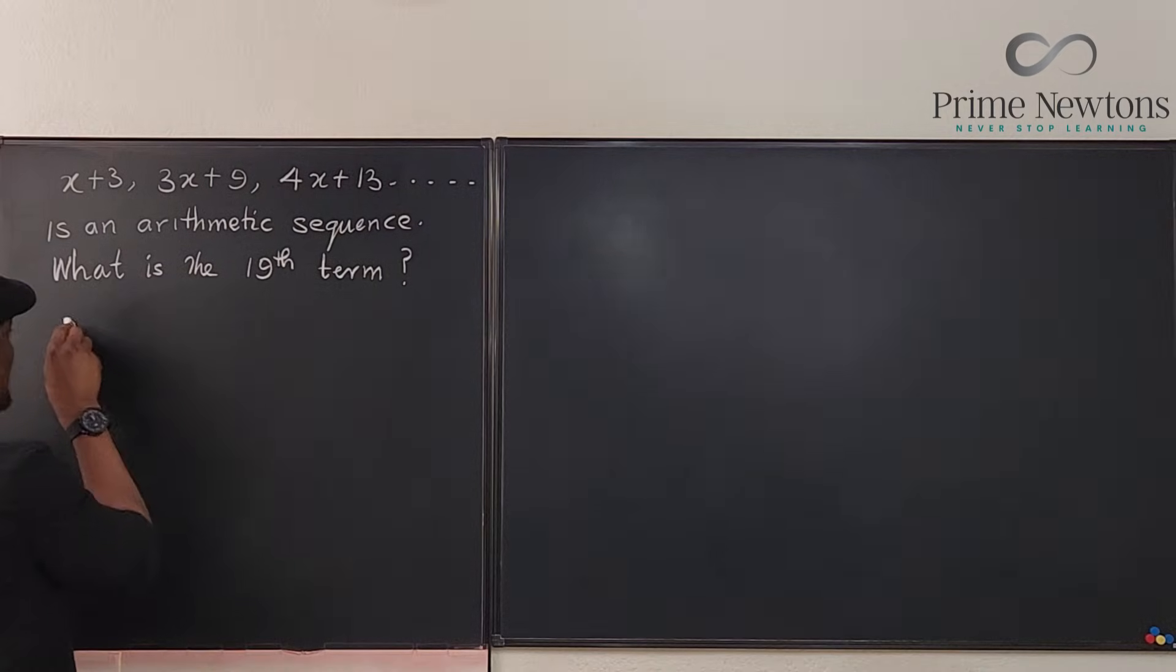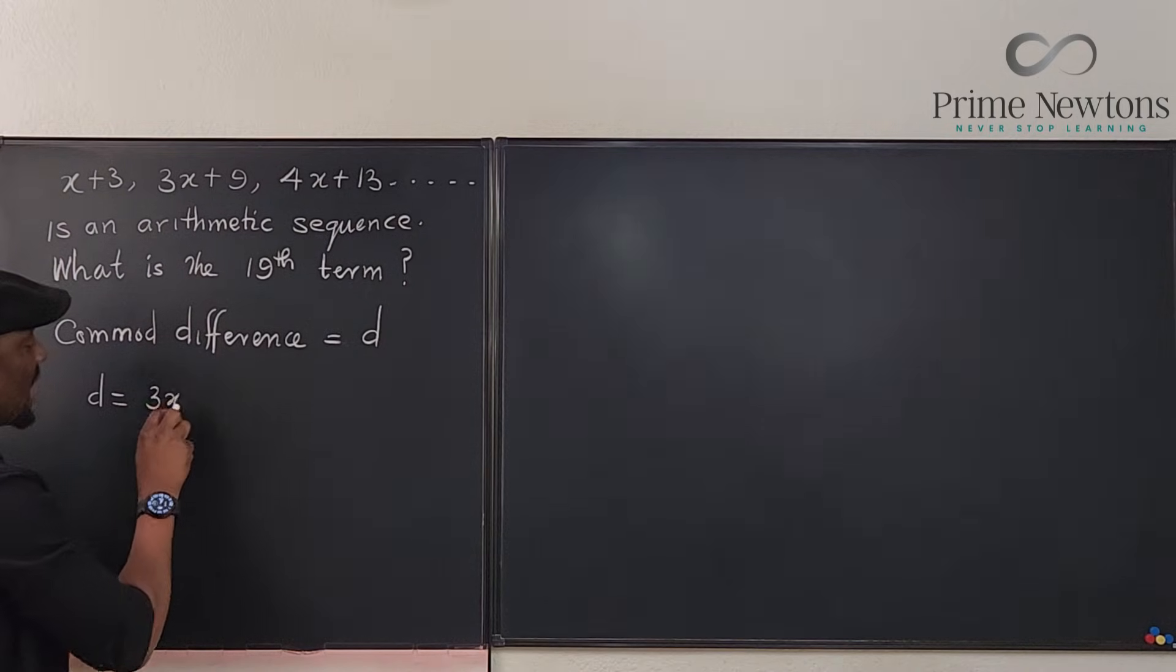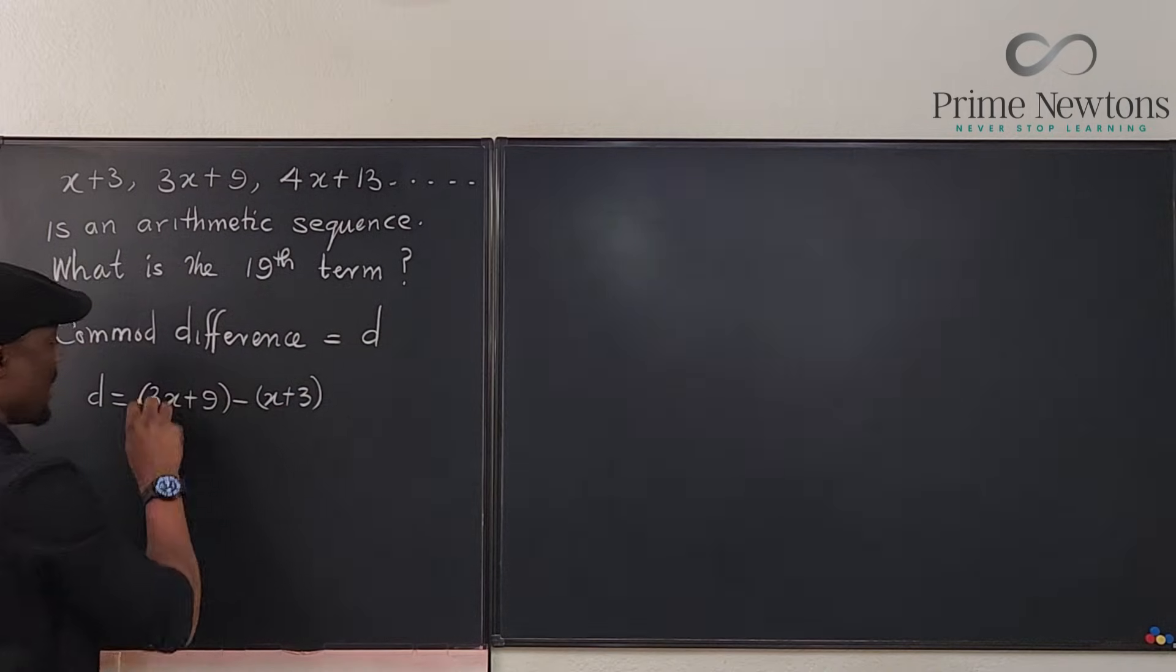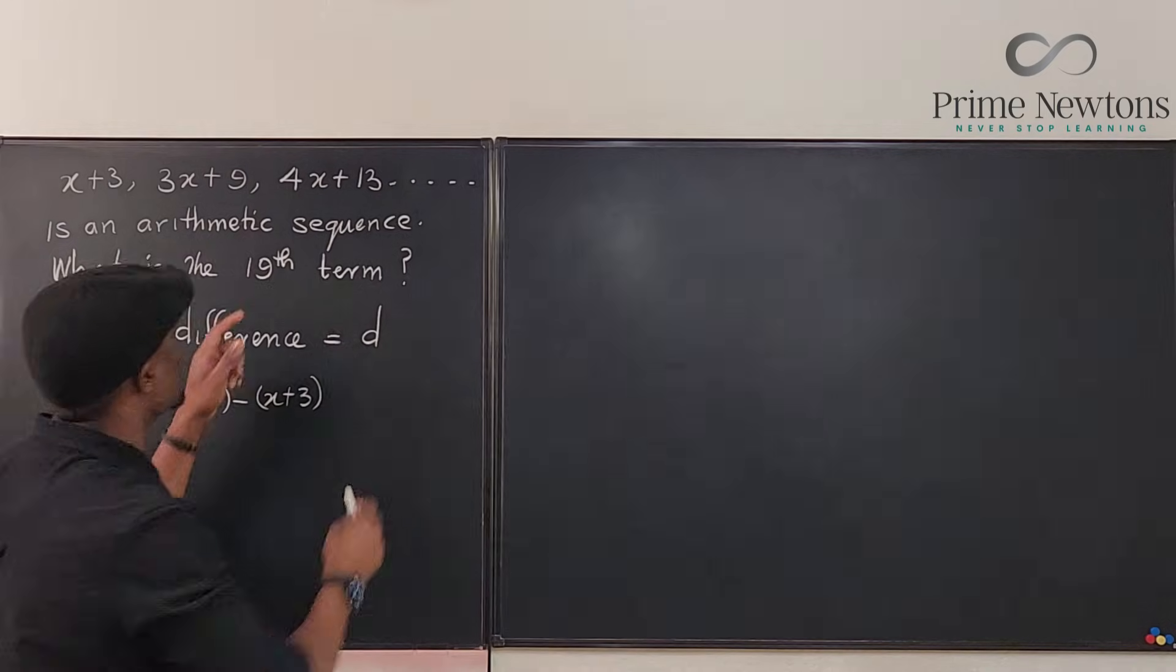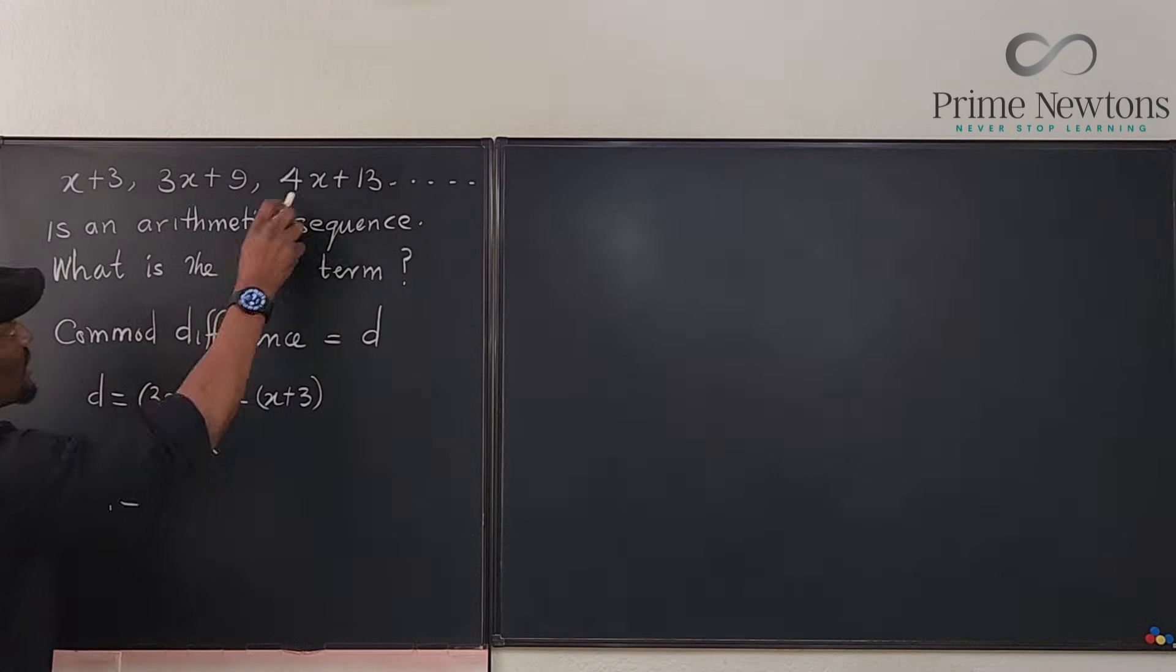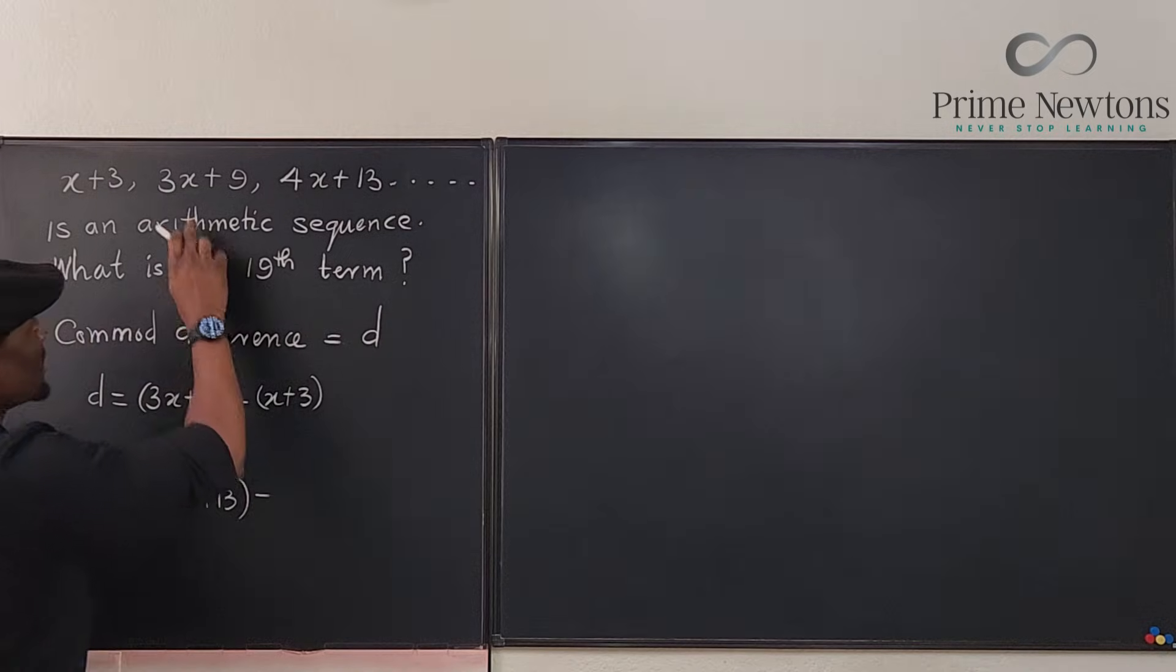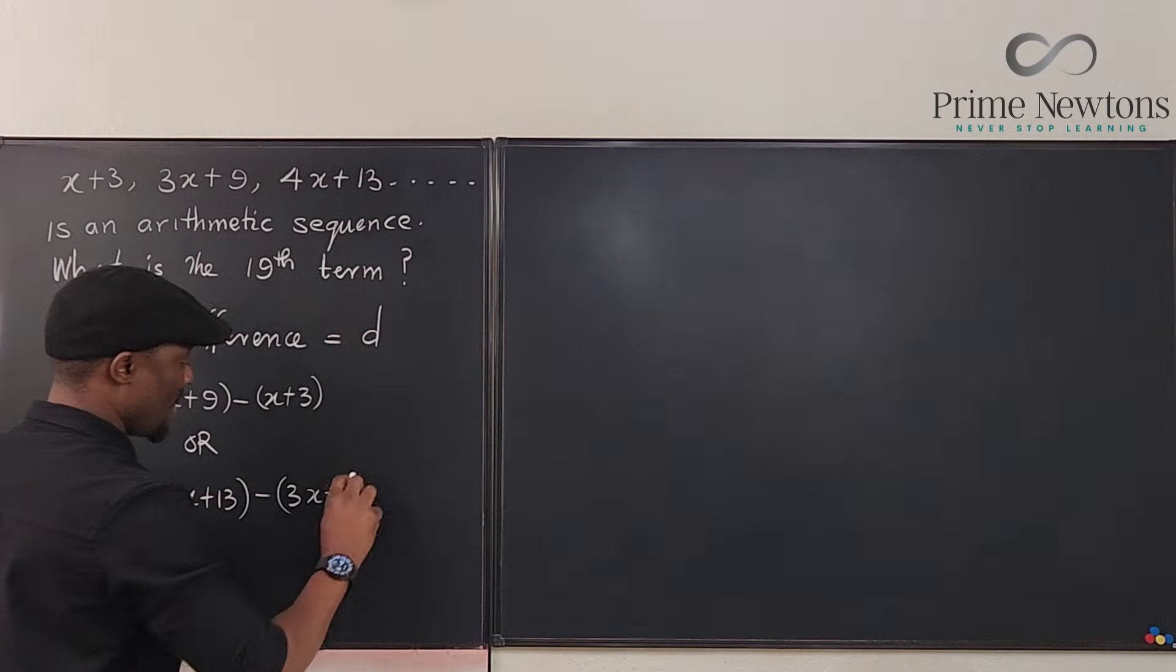So we say common difference: the common difference is the difference between consecutive terms, which is 3x plus 9 minus x plus 3. Okay, we know that this is going to be our common difference. Now that's one way to calculate it. Or you can say it is the difference between the next two terms. You can also say that the common difference is 4x plus 13 minus 3x plus 9. That's another way to solve it.